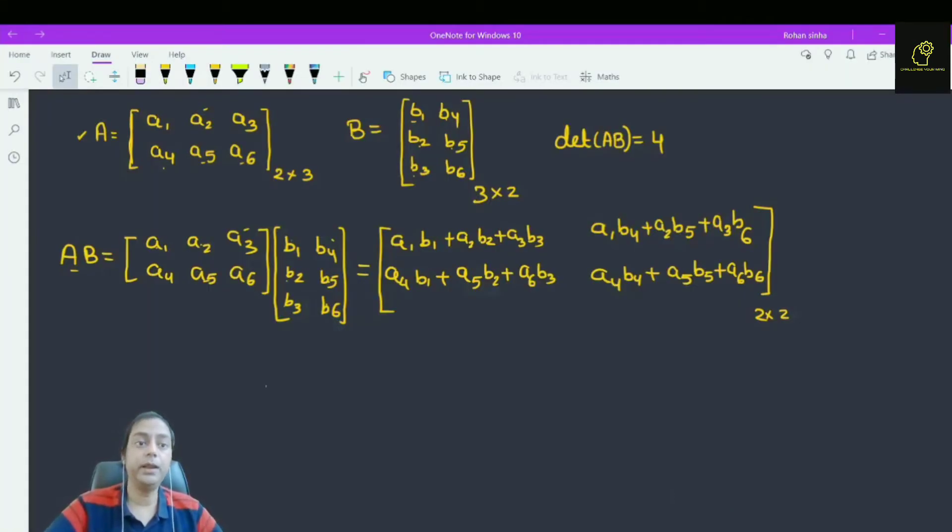Let us suppose the matrix A is equal to A1, A2, A3, A4, A5, A6. This is a 2 into 3 matrix.